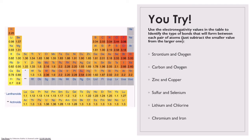Here's that table I told you about — we've got all these different electronegativity values listed for most of the elements on our periodic table. What I would like you to do is try to determine whether the bonds formed between the given atoms are going to be ionic, polar covalent, non-polar covalent, or metallic. Go ahead and pause the video, and we'll come back and talk about it together in just a second.